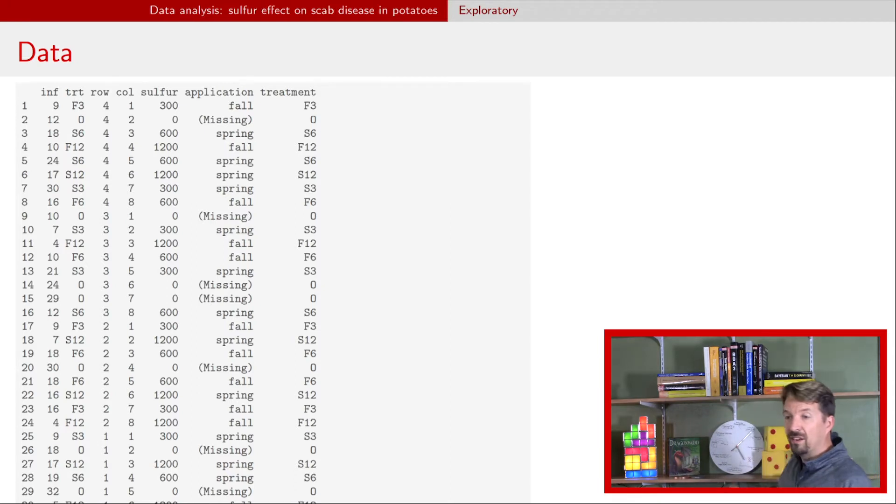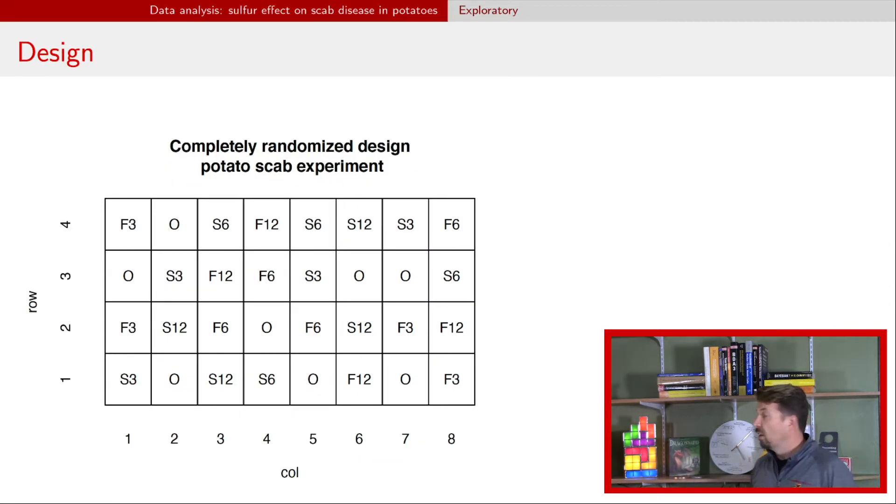And then the final column here is just going to be a quick way of determining the treatment. So the shorthand here, zero means no sulfur at all. F and then the amount was fall, and then the amount times 100 that was added. And then S, the amount is the same thing, but now in spring.